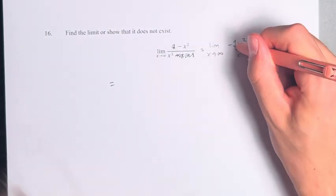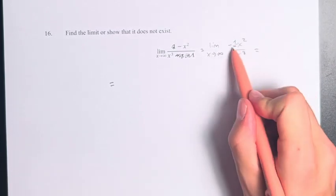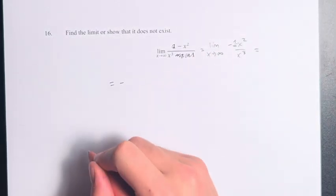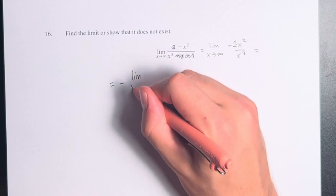What I'm going to do is say this is basically just negative 1 times x squared, so I'm going to move the negative sign outside of it. We have negative and then the limit as x approaches infinity.